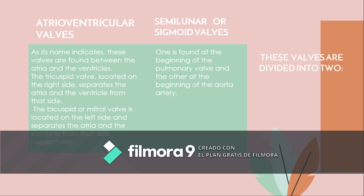The atrioventricular valves, as their name indicates, are found between the atria and the ventricles. The tricuspid valve is located on the right side and separates the atrium and ventricle on that side. The bicuspid or mitral valve is located on the left side and separates the atrium and ventricle on that side. The semilunar or sigmoid valves: one is found at the beginning of the pulmonary artery and the other at the beginning of the aorta.